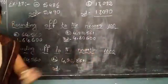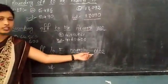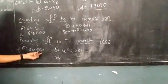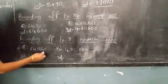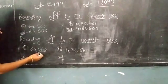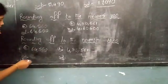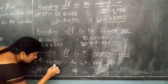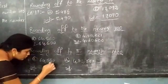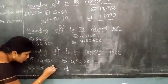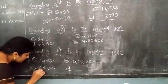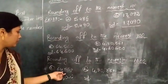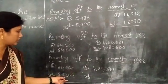Next, rounding off to the nearest thousand. We need to check the last 3 digits. Observe these 3 digits — this is more than 500. So we increase the thousands value by 1, giving us 5. The 100's, 10's, and 1's values are all replaced with 0, and the other digits are retained as they are. So the rounded number of 64,560 is 65,000.